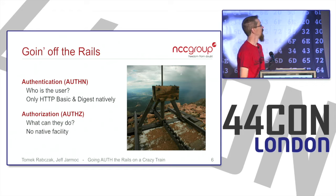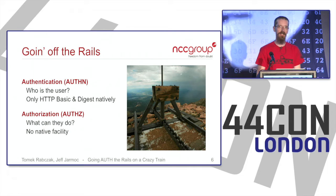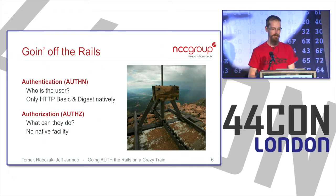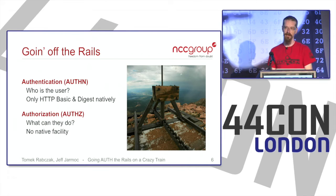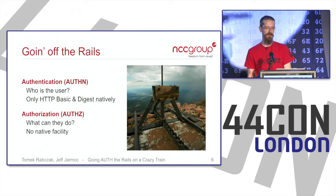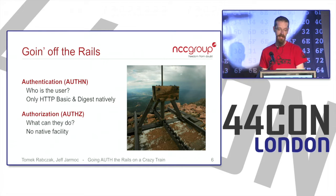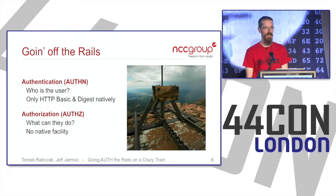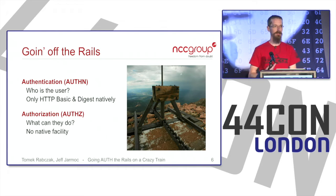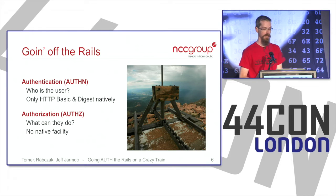Authentication and authorization are two separate things. Authentication focuses on who the user is — establishing and proving their identity. Authorization determines what actions they're allowed to perform. Within Rails, authentication is really only supported natively by HTTP basic and digest auth, which is probably not what you're looking for in most applications. For authorization, there's really no native facility, though there are helper methods to make building your own systems a bit easier.